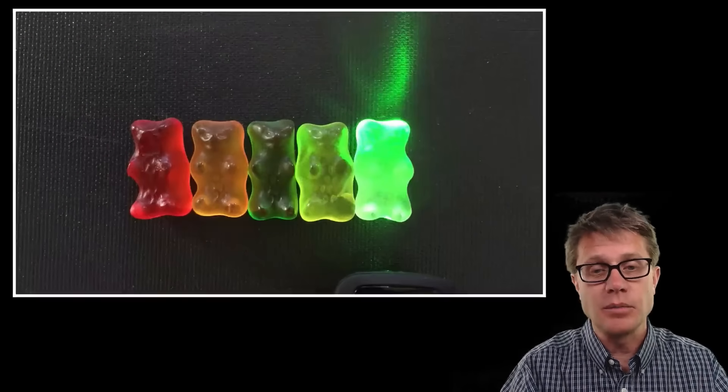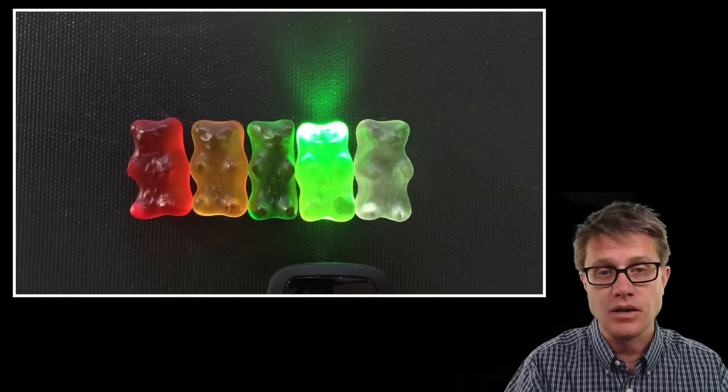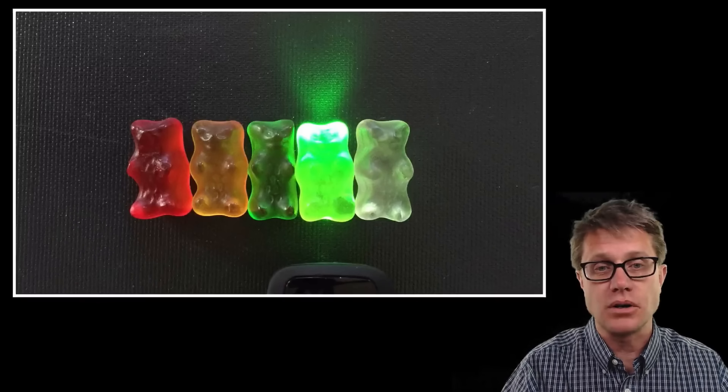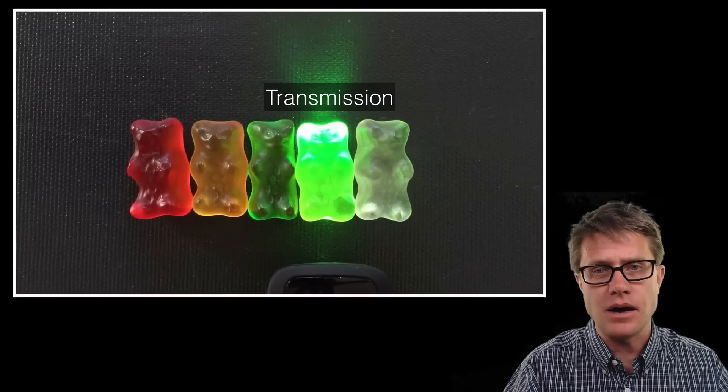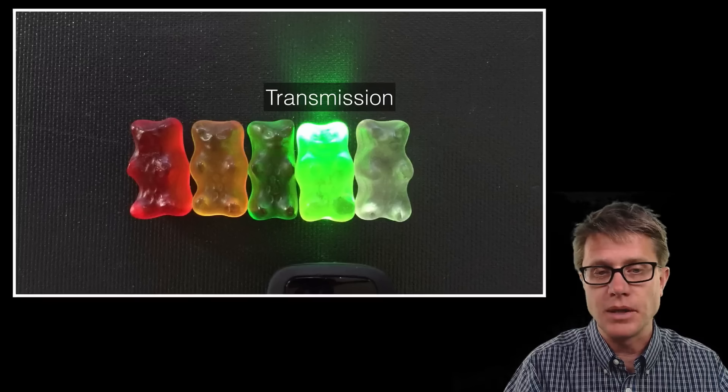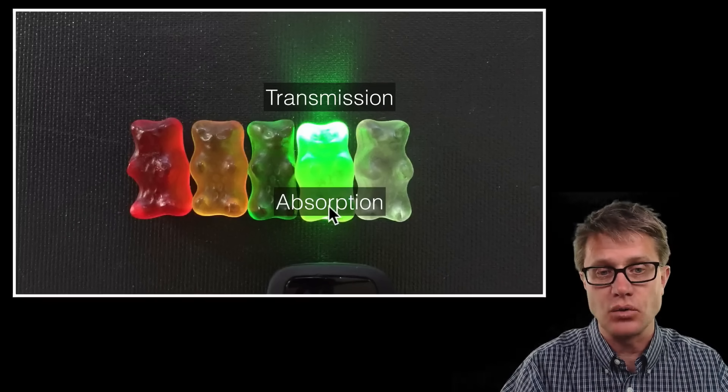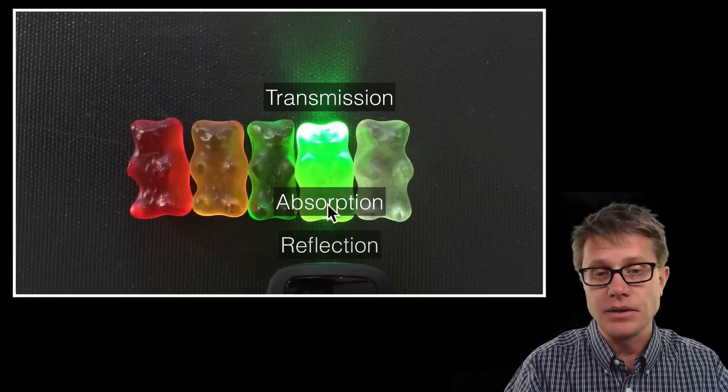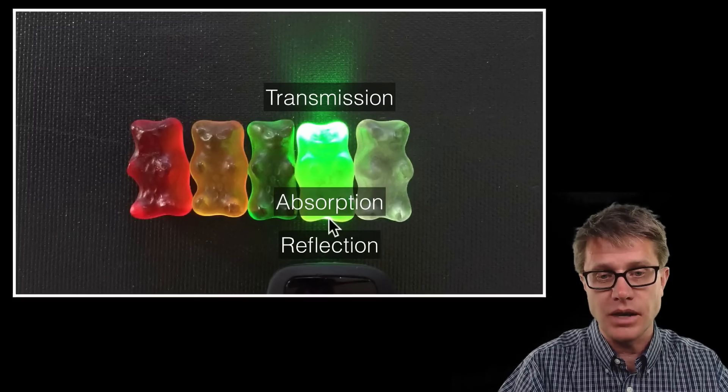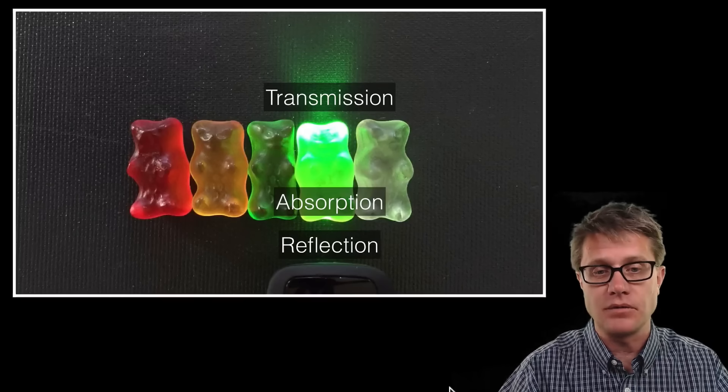If we look at this gummy bear experiment, where I'm shining the laser at the gummy bears, we can see all three of these occurring. If I were to say where is the transmitted light, that's going to be on the top. Where would we look for the absorbed light? It's going to be on that surface. So right as it goes in, some of it is absorbed by the gummy bear itself. And then if we were to look at the reflected light, you can see the reflected light is going to be right here on the front of that gummy bear. It's bouncing back where it came from.